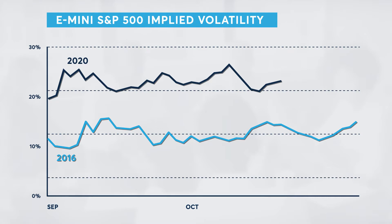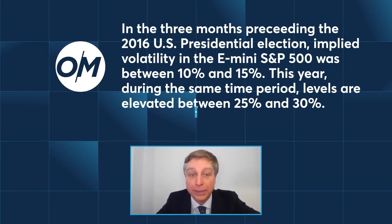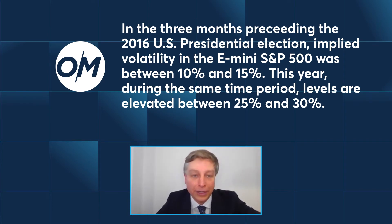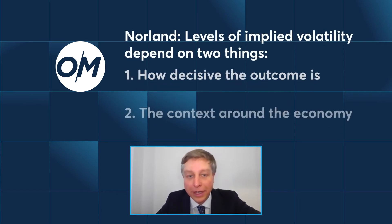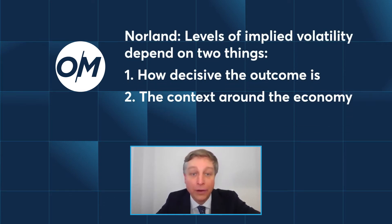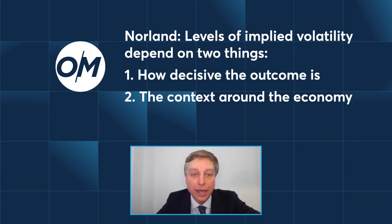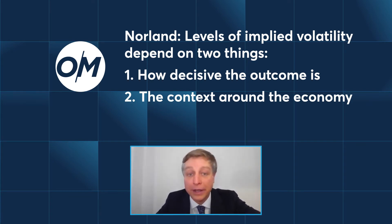I think the takeaway is that it's fairly typical before elections. On average, they tend to be somewhat more elevated during the month of October before an election. Then what they do after the election really depends on the outcome. If the outcome is decisive, they tend to come down fairly normally. If the outcome is in dispute, like it was back in the year 2000, they may remain elevated for a longer period of time.